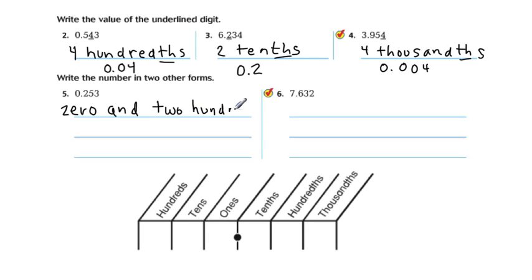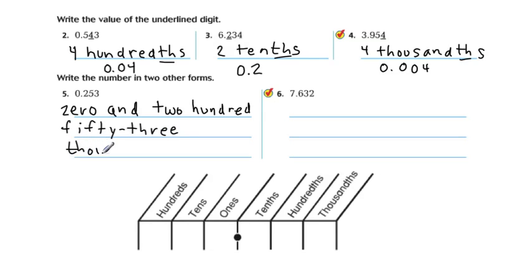—with a hyphen — 53 thousandths. And why is it thousandths? Because it ends in the thousandths place. All right, so that's the word form of this number.